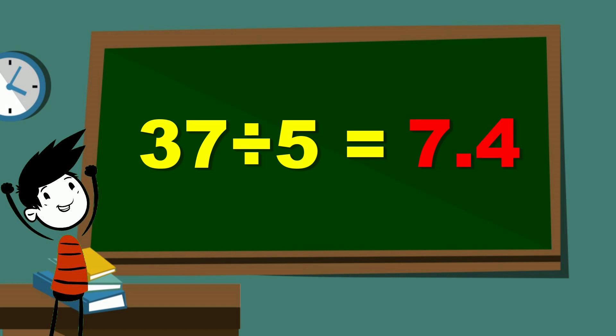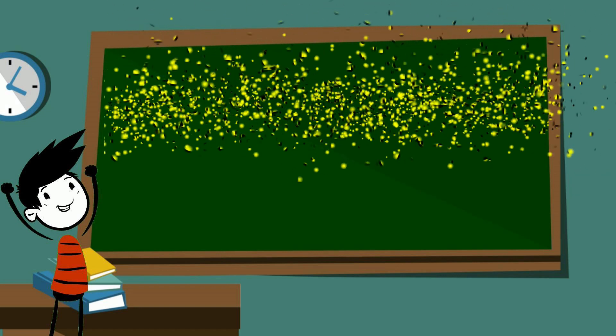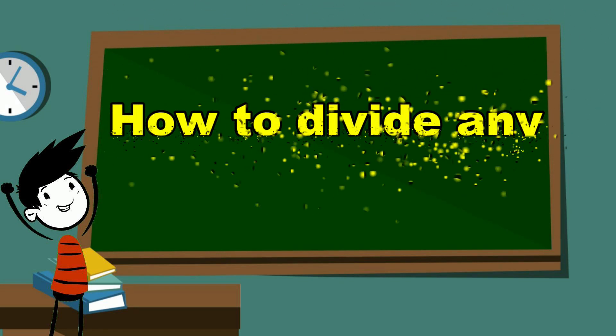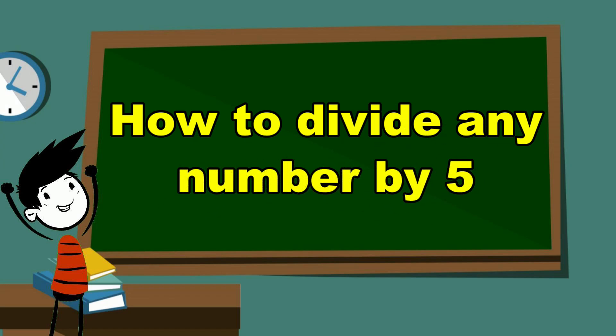And although asking you what 37 divided by 5 is does seem a bit arbitrary, there's actually a super easy trick to easily divide any number by 5 in just 5 seconds or less. So in this video, I'm going to be showing you that trick.